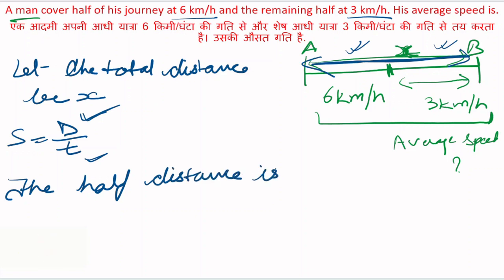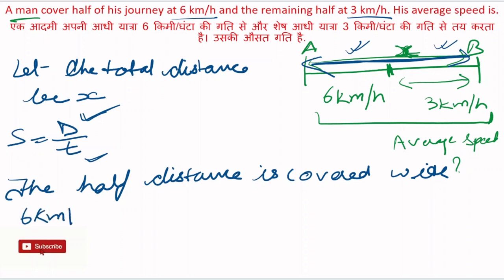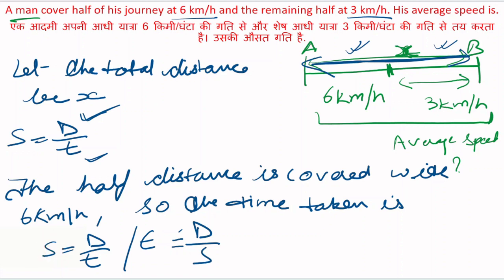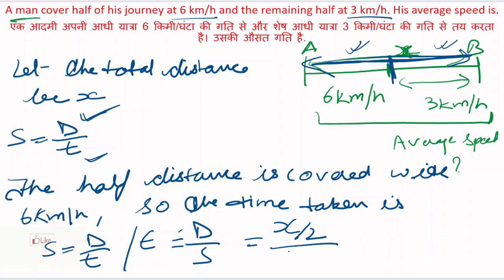The half distance is covered with 6 km per hour. So the time taken is — speed is equal to distance by time, therefore time is equal to distance by speed. This is half distance. If total distance is x, then half distance is x by 2. Speed is equal to 6 km per hour, so time will be x by 12.